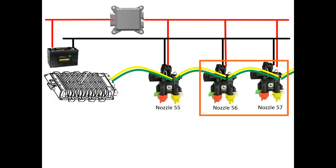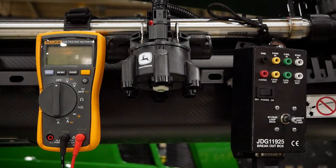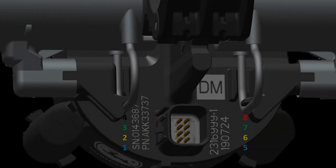While most of the next steps could be performed using only a multimeter, it is recommended to utilize the JDG 11925 test box for the following tests. Note: the CAN high and low are in a passive series circuit, coming into the nozzle on pins 6 and 7, and going out to the next nozzle outboard on pins 2 and 3.